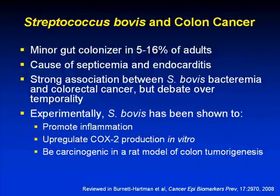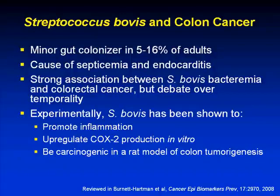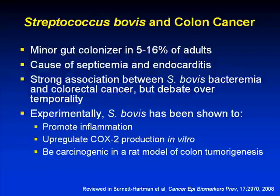Another bacteria that's received attention is Streptococcus bovis and its potential relation to colon cancer. This is a gut microbe present in about 5% to 16% of adults. It's been associated with septicemia and endocarditis, and because of the strong association between S. bovis bacteremia and colorectal cancer, the next step has been to ask whether it's also associated with colon cancer. However, one of our biggest problems in this field is that we do not have data allowing us to determine causality.